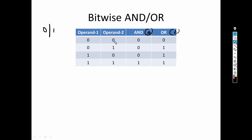When both operands are 0, AND returns 0 because 0 × 0 = 0, and OR returns 0 because 0 + 0 = 0. When operands are 0 and 1: AND gives 0, OR gives 1. When operands are 1 and 0: AND gives 0, OR gives 1. For AND, we only get 1 when both operands are 1. OR also gives 1 when both operands are 1. This is the truth table.